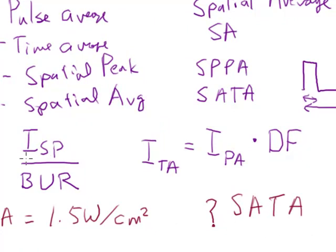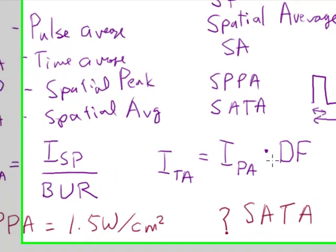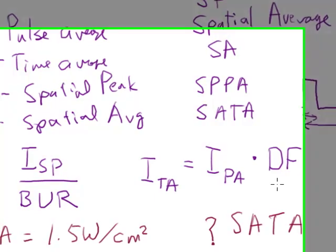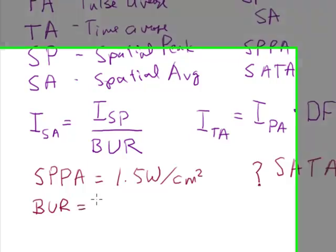Okay, so to get to the spatial average, I've got to divide by the beam uniformity ratio. And then to get to the time average intensity, I've got to multiply that result by the duty factor. So let's say that I have a beam uniformity ratio equal to 3.